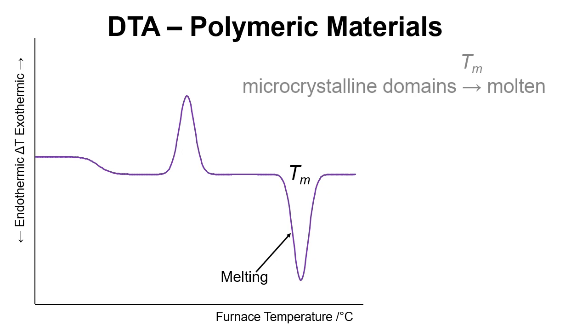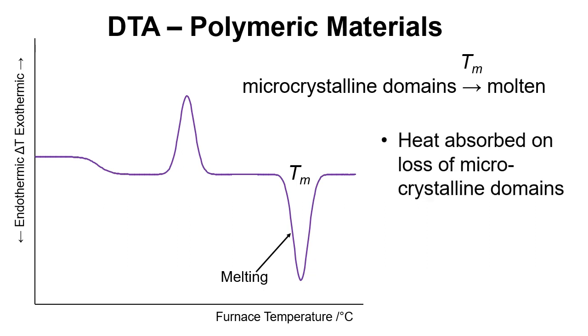And then we have melting where we actually melt these microcrystalline domains and we get a molten polymer. So heat is absorbed on the loss of microcrystalline domains, meaning that it's an endothermic process. So we have this endothermic peak. The peak is pointing down in the direction of any endothermic processes.